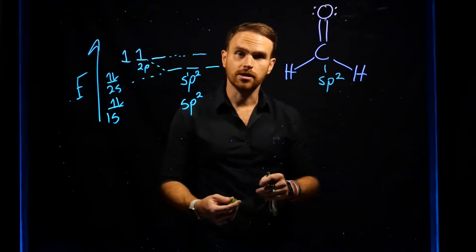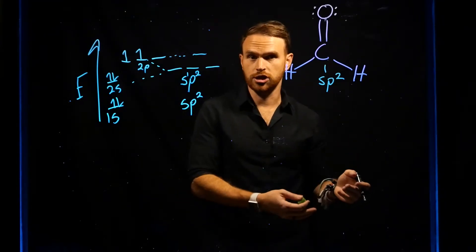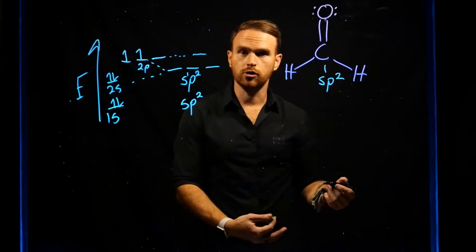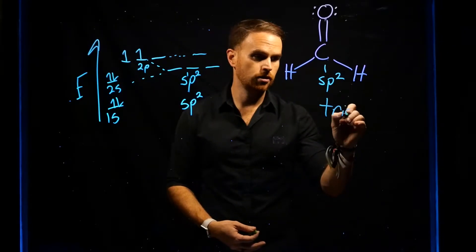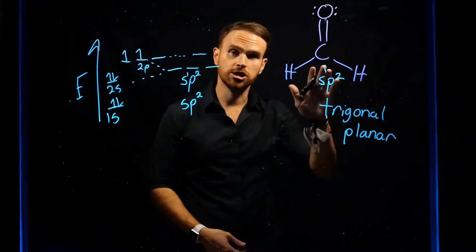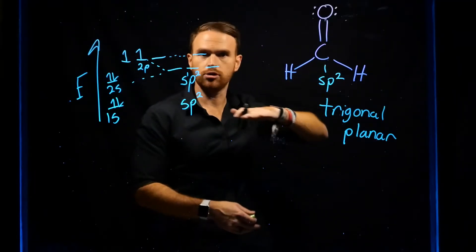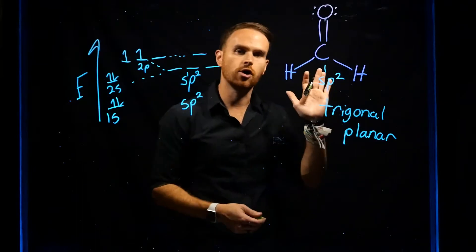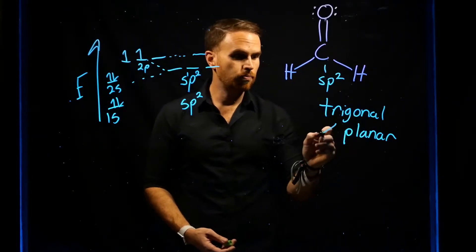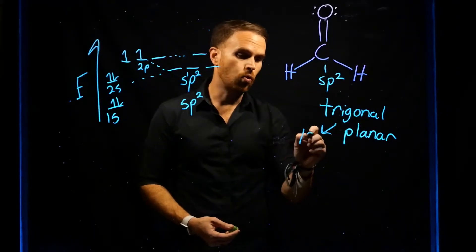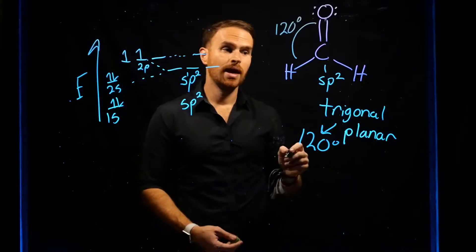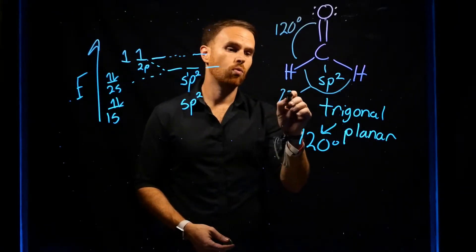Another concept from VSEPR theory is determining the electron or molecular geometry of molecules to figure out their three-dimensional shape. SP2 hybridized molecules always form trigonal planar molecular geometry — meaning this molecule is flat, lying on a plane. From here, we can also determine the bond angle around each of these bonds. Trigonal planar always forms bonds around the center atom at 120 degrees, so the angle between each pair of bonds is 120 degrees.